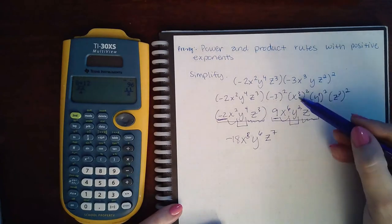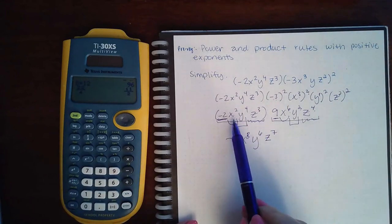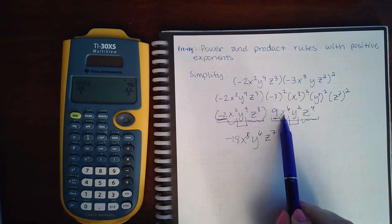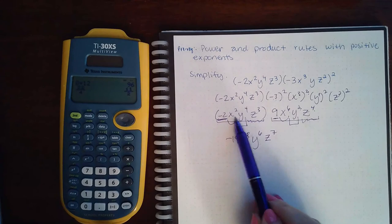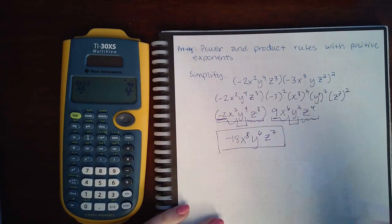So when you have an exponent raised to an exponent, you multiply. When you have variable terms multiplied by each other with the same base, you add their exponents. This is the final expression.